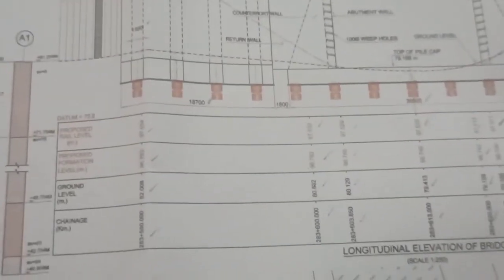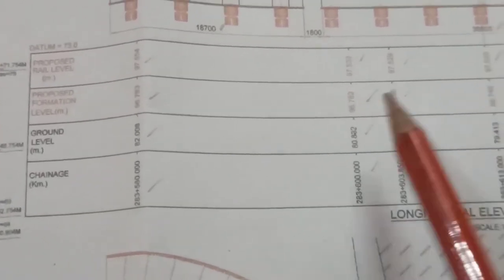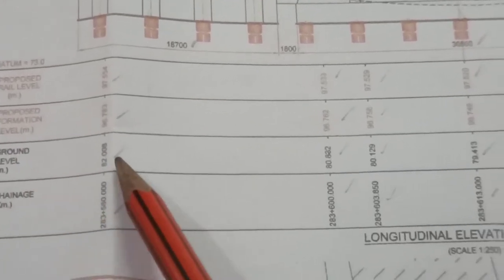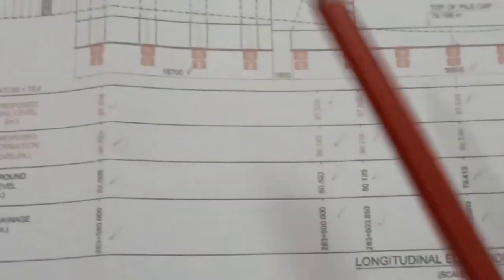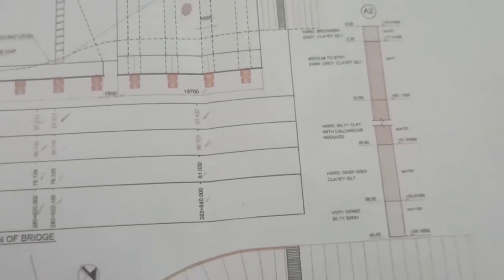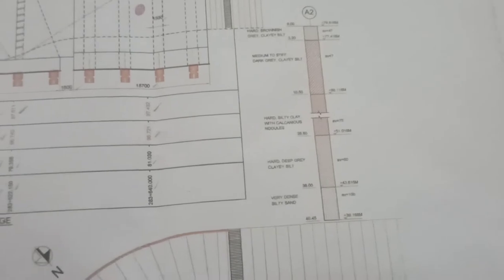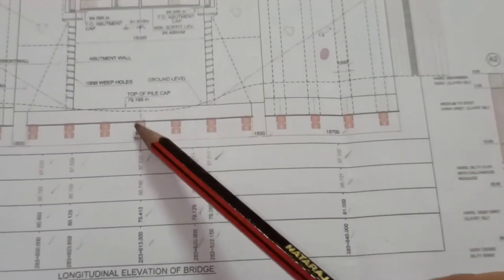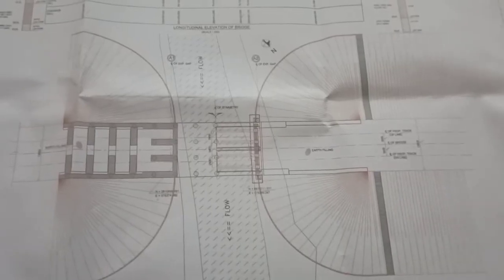Let me zoom in on the details given in this table. Since this is a railway bridge, we have rail levels, formation levels, ground level, and chainage. The edge of chainage is also given. Apart from that, we also have the borlog data in this major bridge drawing, based on which the foundation designing is done.